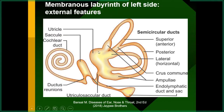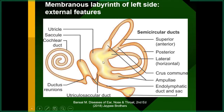The utricle and saccule sense linear acceleration, deceleration, tilting, and gravity. They have specialized vestibular receptors — specifically the maculae — for sensing linear movement, tilting, and gravity.